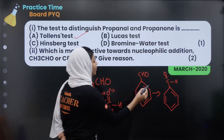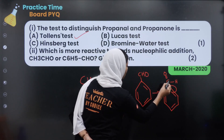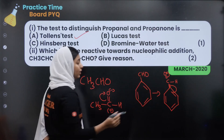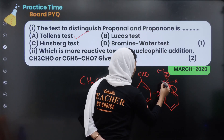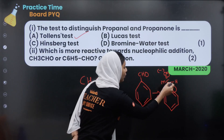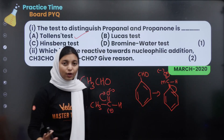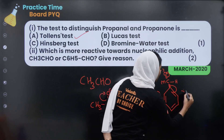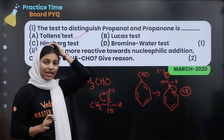Now let's look at C6H5CHO — benzaldehyde. The electrons in this bond are shifted due to resonance. The phenyl group shows a +R effect, where electrons are delocalized. This +R effect reduces the positive charge on the carbonyl carbon, making C6H5CHO less reactive towards nucleophilic addition.